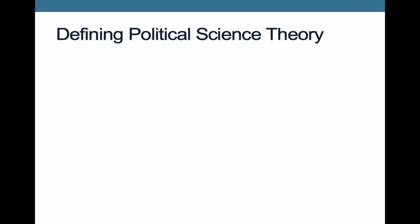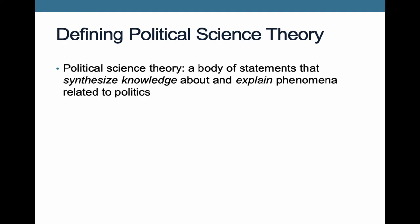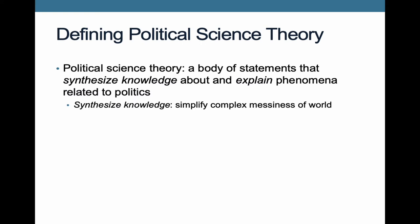Finally, theory. A political science theory is a body of statements that we use to synthesize knowledge about, and then explain, phenomena related to politics. Breaking this down: the first part is that we are trying to synthesize knowledge — to simplify the complex messiness of the world and come up with general models and patterns. We also aim to explain — to assess causes and effects of political phenomena. So we can develop maps of the world to help us understand it, addressing issues of causality.